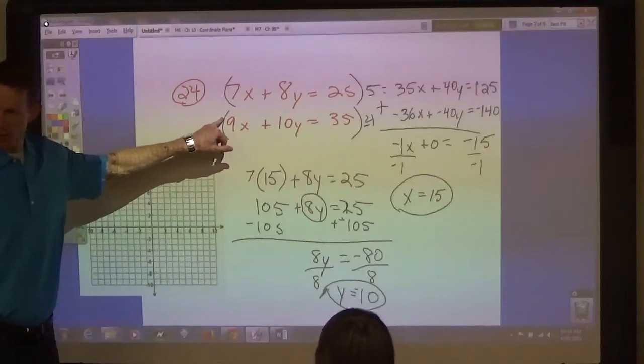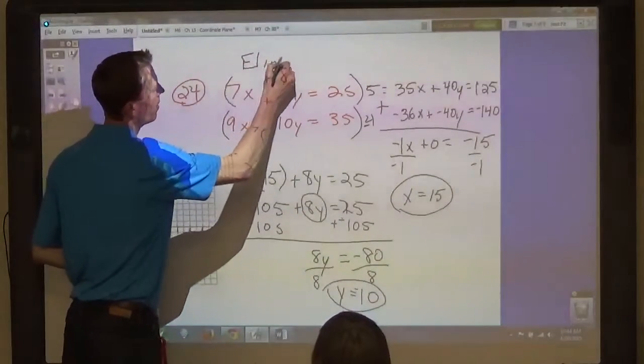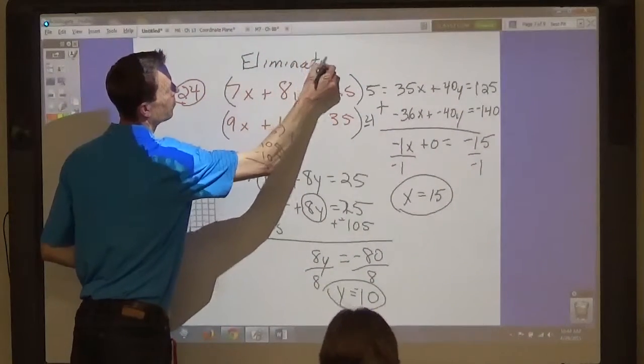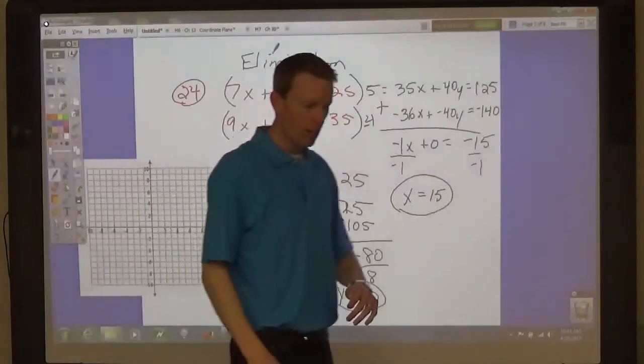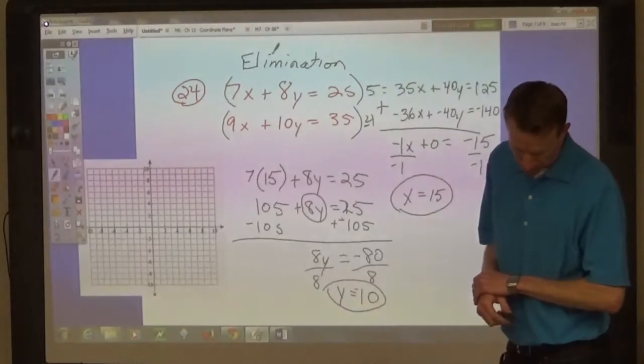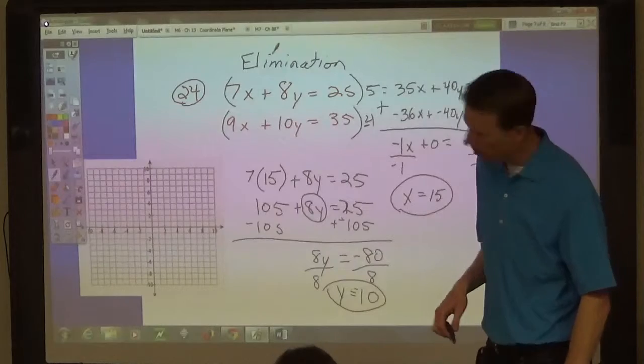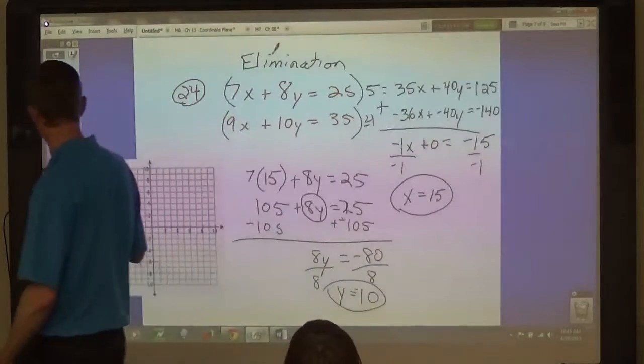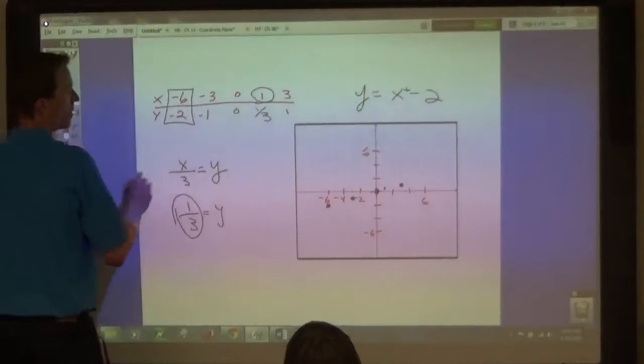And what method did we use for this one? Elimination. And then you have to write that. So the first one we used graphing. This one we used elimination. When would we say we'd use substitution? When there's like an x or a y equals something. Yeah. So in the third one, in 25, let's just go over this page.